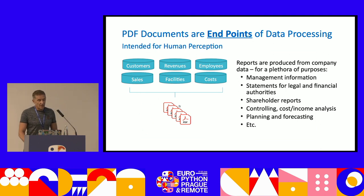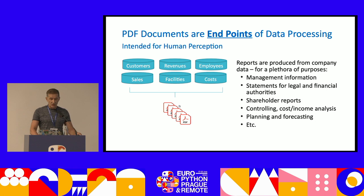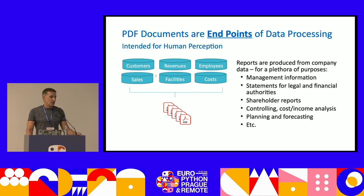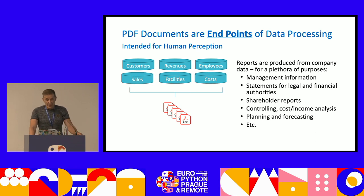PDF documents are endpoints of data processing. They are created at a certain point in time based on productive information of a company — management information, cost information, employees, and so on. Reports are created at regular intervals, monthly, semi-annual, and similar. They are used for reporting: how is the company doing, if it's shareholder-based? The SEC is interested in this, shareholders have to be informed. All this goes into PDFs, and those PDFs are stored somewhere.